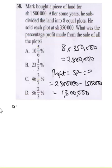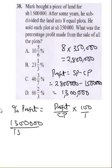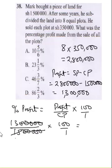For the percentage profit, it's going to be profit over cost price times 100. So this is going to give us 1.3 million divided by 1.5 million times 100. This simplifies — cancelling gives us 5 here, that's 3, and 5 here becomes 20. So you get 260 divided by 3.